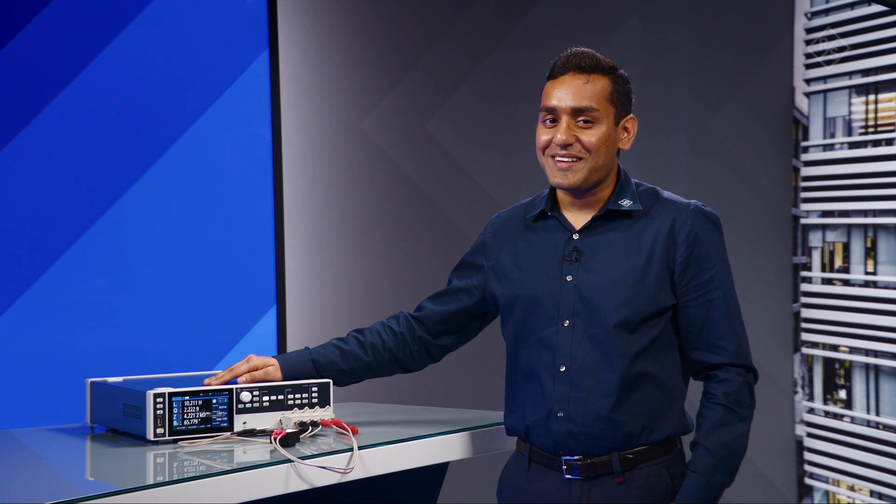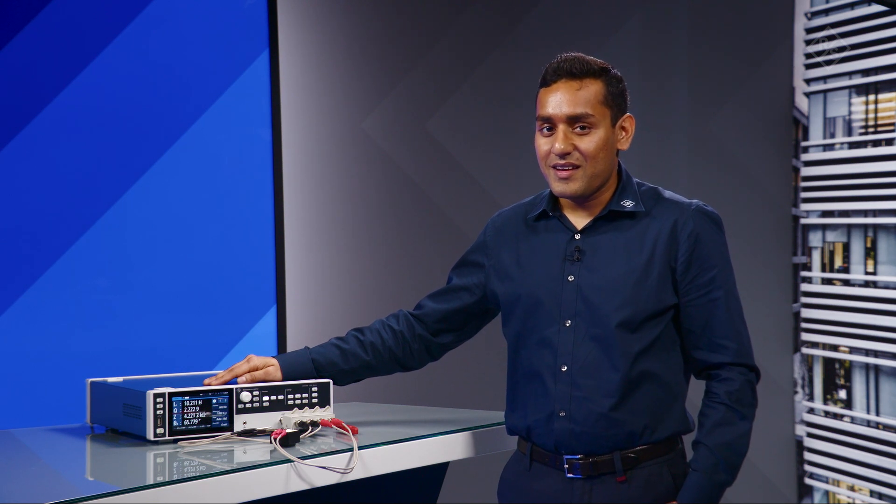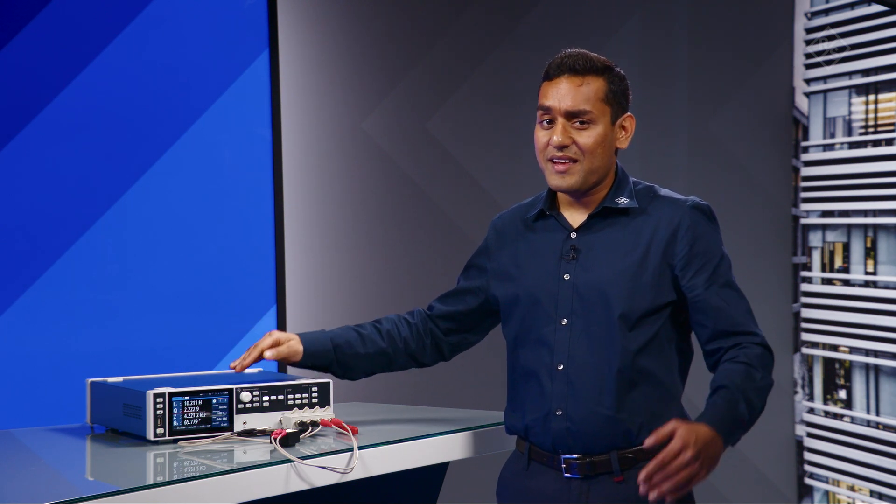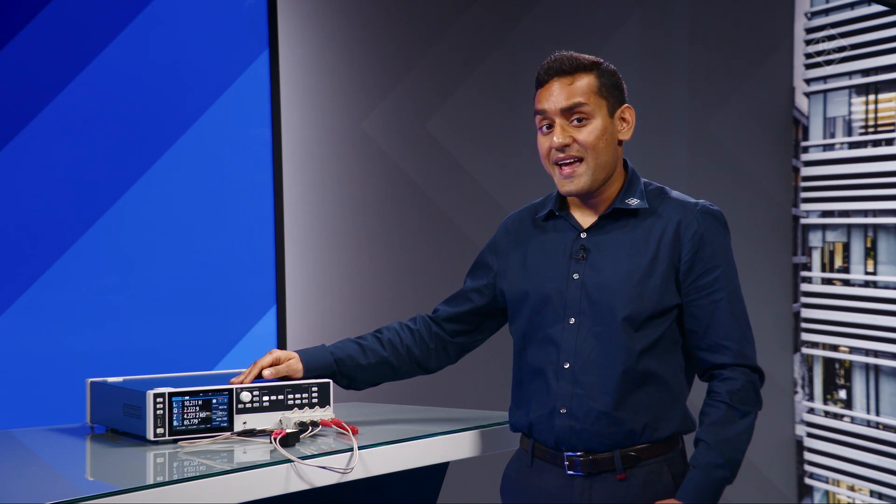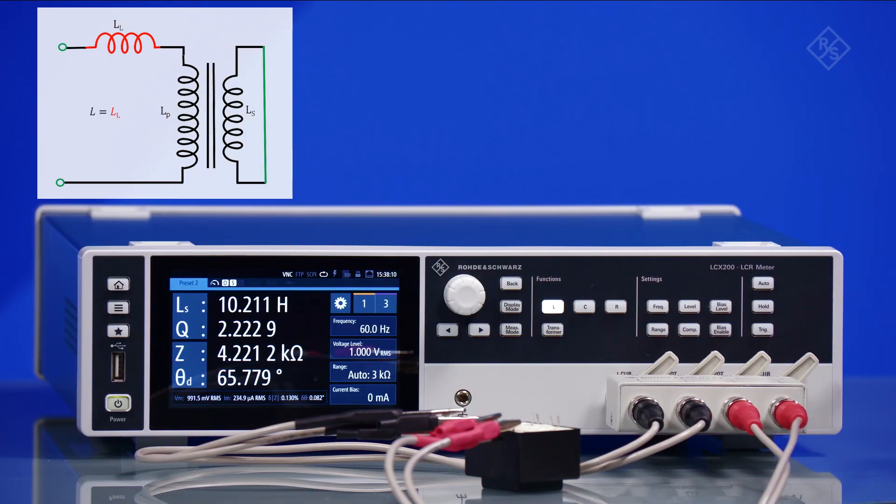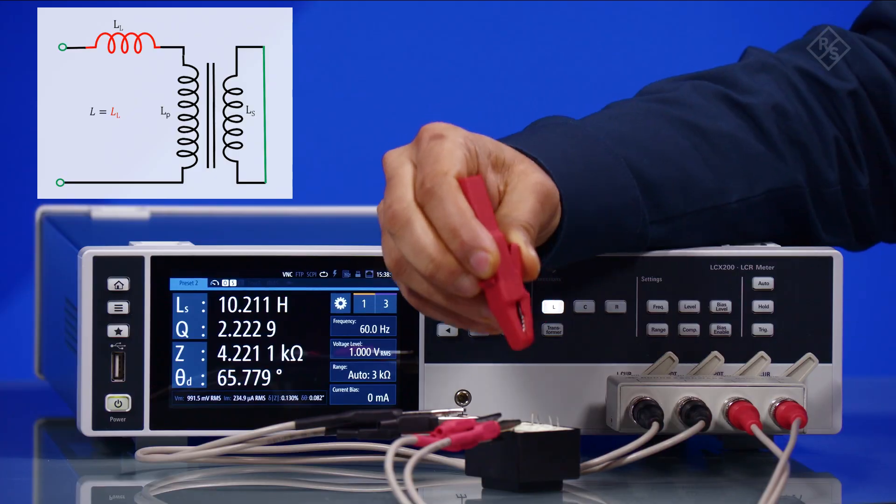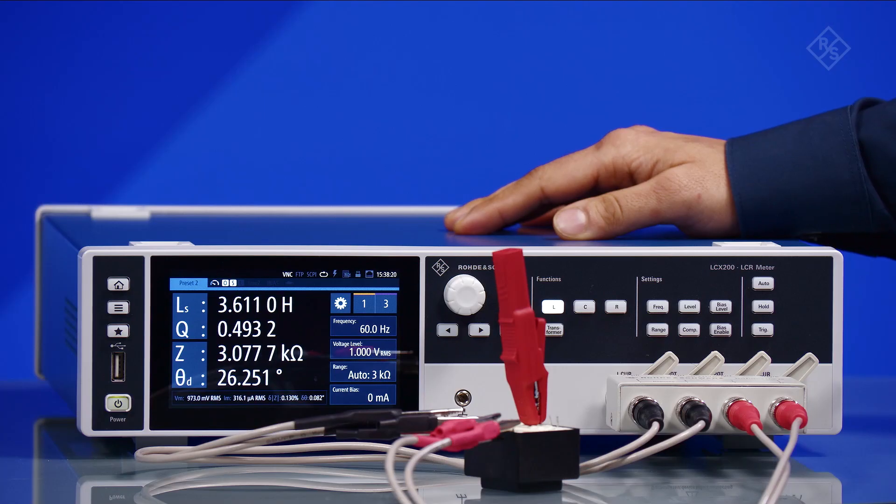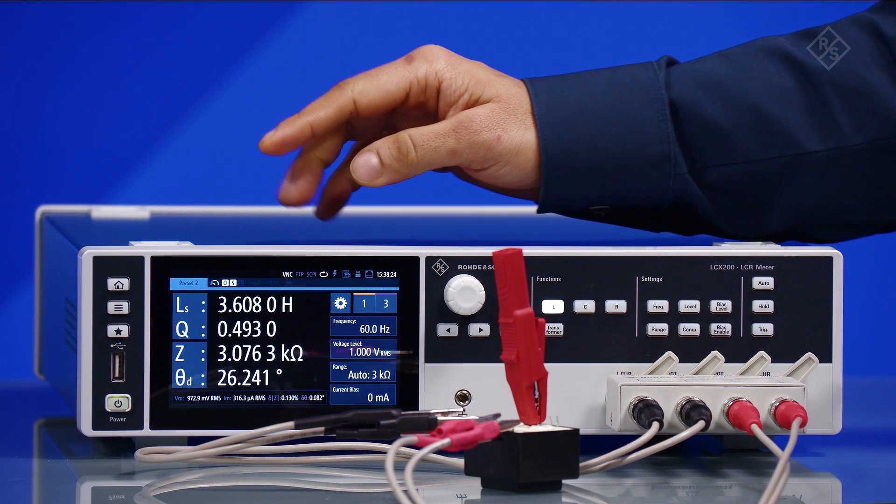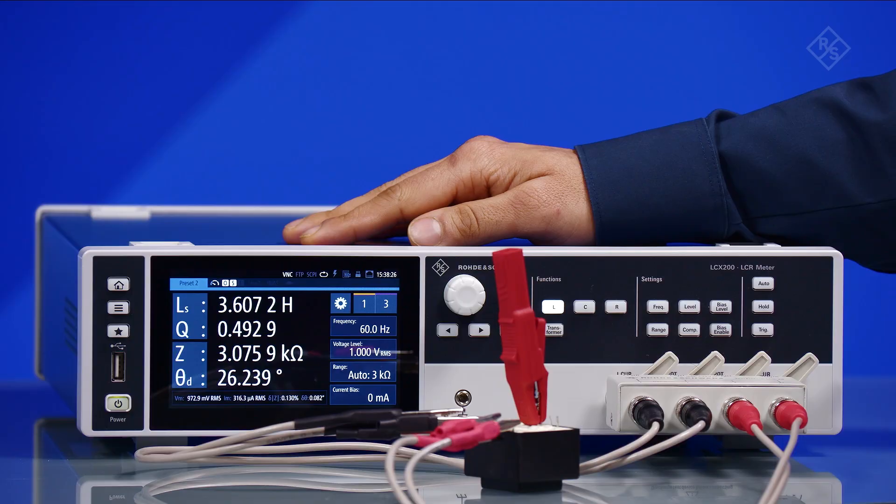Now let us have a look at how to do a leakage inductance measurement. The connections and measurement settings for the leakage inductance measurement are the same as for the primary inductance, except that the secondary winding in this case is shorted using a safety alligator clip. The measured inductance value on the screen now corresponds to the primary leakage inductance.